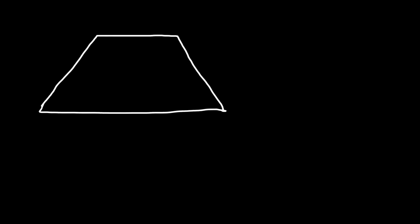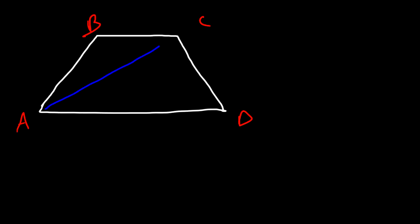In this video we're going to talk about how to prove if a quadrilateral is an isosceles trapezoid. The first thing you can prove is that the legs of the trapezoid are congruent. You could also prove that the lower base angles are congruent, or that the upper base angles are congruent. Finally, if you can show that the diagonals are congruent to each other, then it's also an isosceles trapezoid. Let's work out an example problem.